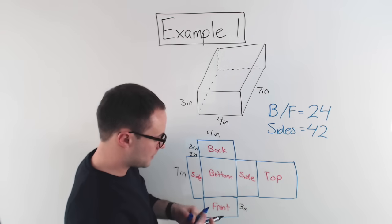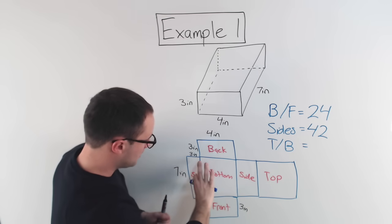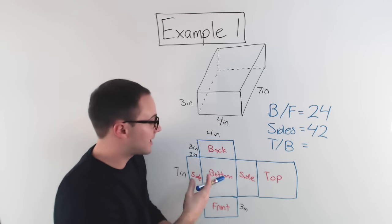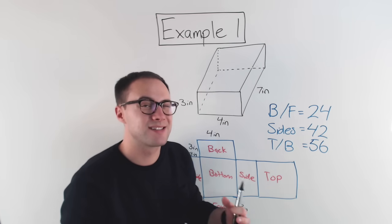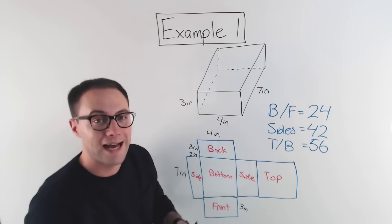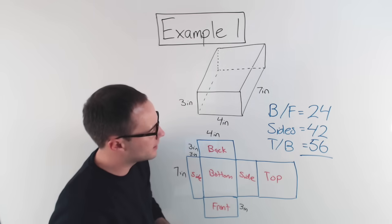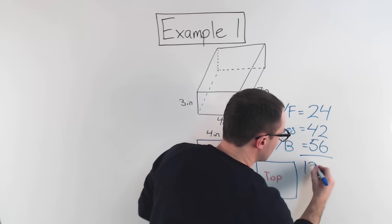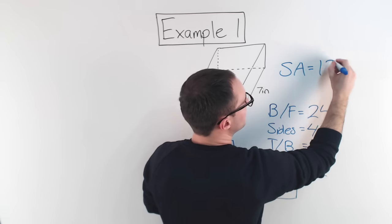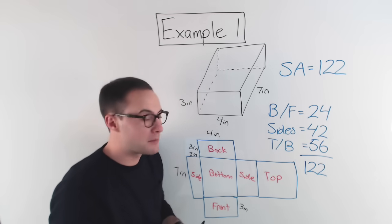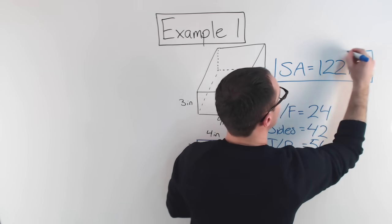Then I've got my top and bottom. Four times seven gives me 28, times two because top and bottom are both congruent, giving 56. Surface area is just the sum of all the faces, so adding them up: 56 plus 24 is 80, plus 42 is 122. So SA equals 122 inches squared for my final answer.